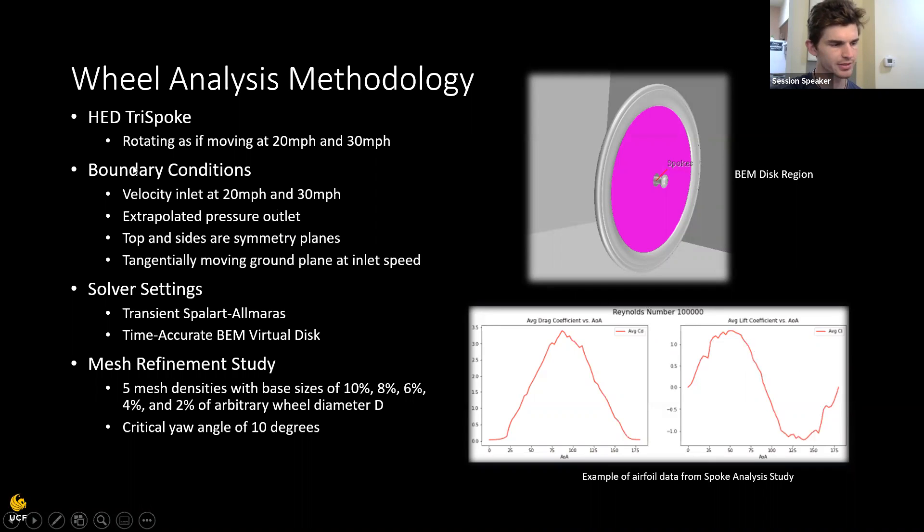Now, these are our boundary conditions. We're going to be focusing on two airspeeds and two ground speeds, 20 miles per hour and 30 miles per hour. These are speeds you would see in a race. And it's also rich with experimental and CFD data. These are our solver settings. We're using a time accurate BEM virtual disk. And we've run some mesh refinement to make sure that we are on a converged grid density.